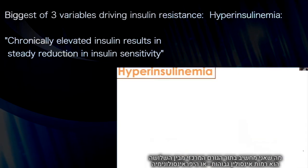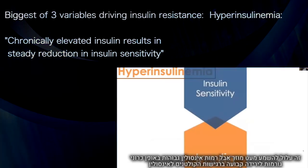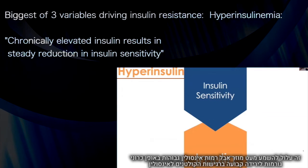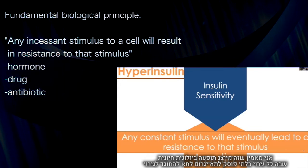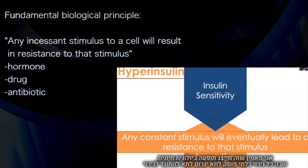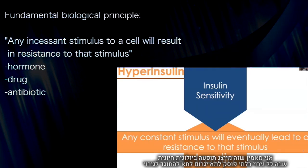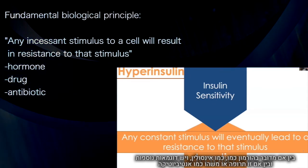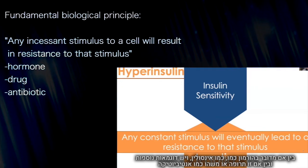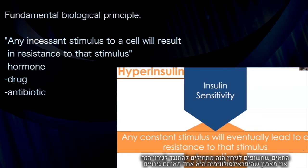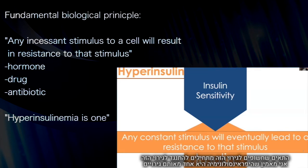What I consider the biggest of these three variables is hyperinsulinemia. This might seem a little strange, but chronically elevated insulin results in a steady reduction in insulin sensitivity. I believe this represents what is actually a fundamental biological principle — namely, that any incessant stimulus to a cell will result in a resistance to that stimulus, whether it is a hormone like insulin, a drug, or something like an antibiotic. The cells exposed to this stimulus become resistant to it. I strongly contend that hyperinsulinemia is one of them.